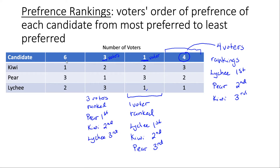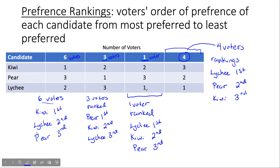In the last column we have six voters who ranked Kiwi first, Lychee second, and Pear third. That's the general idea of how we read these tables. When reading them, something very important to keep in mind is to not get the number of voters confused with their preference rankings.